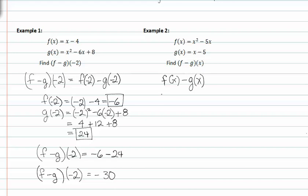We know f of x is x squared minus five x, and we're subtracting the whole quantity, so we need to put this in parentheses. g of x is x minus five.